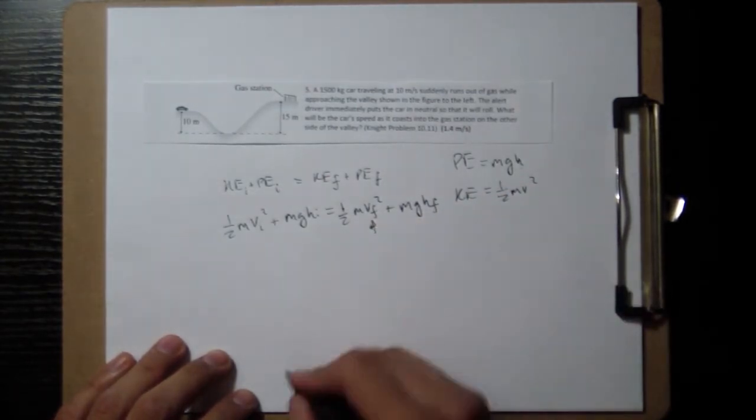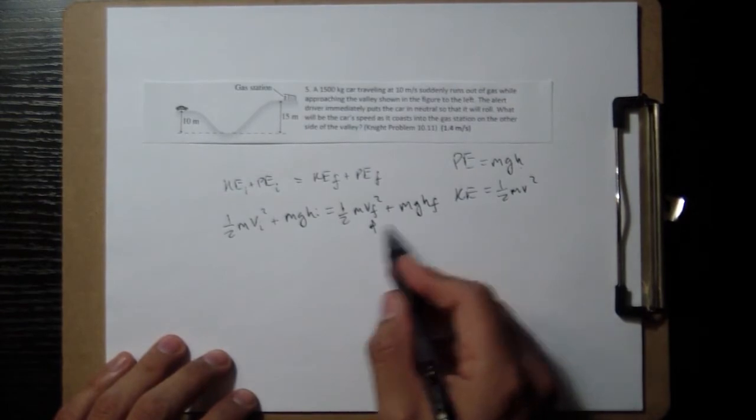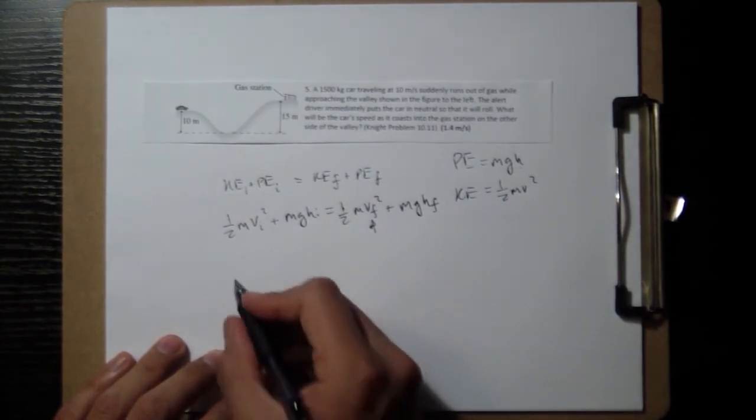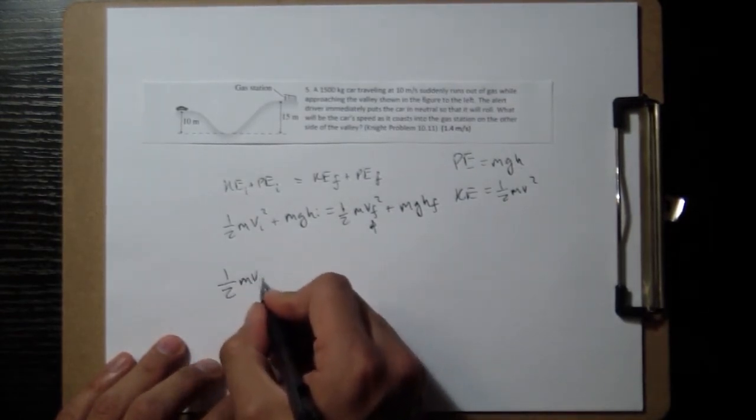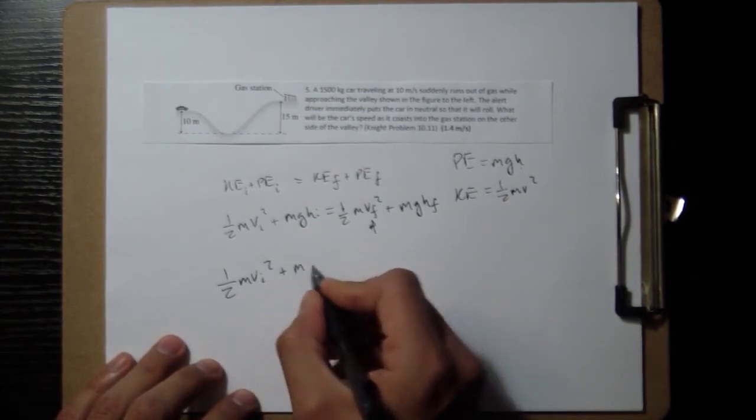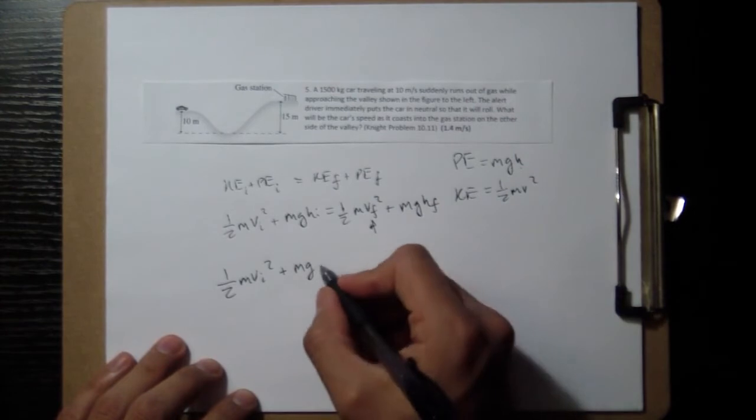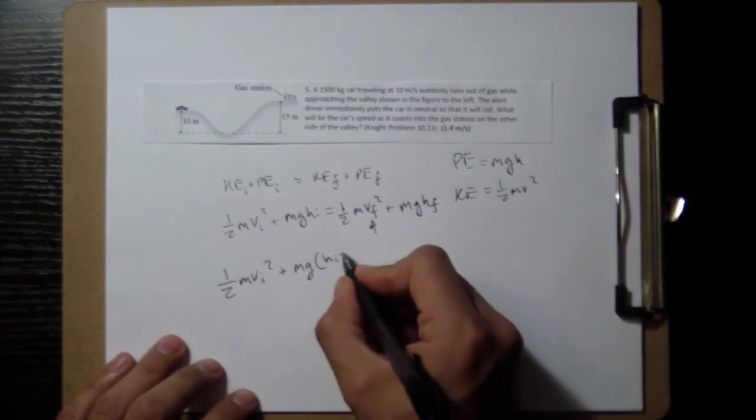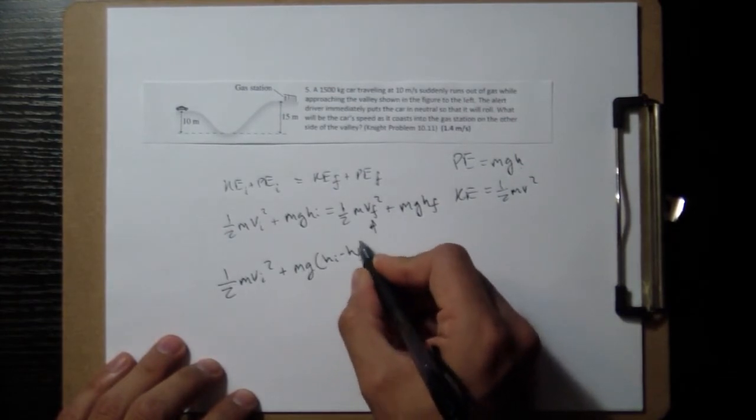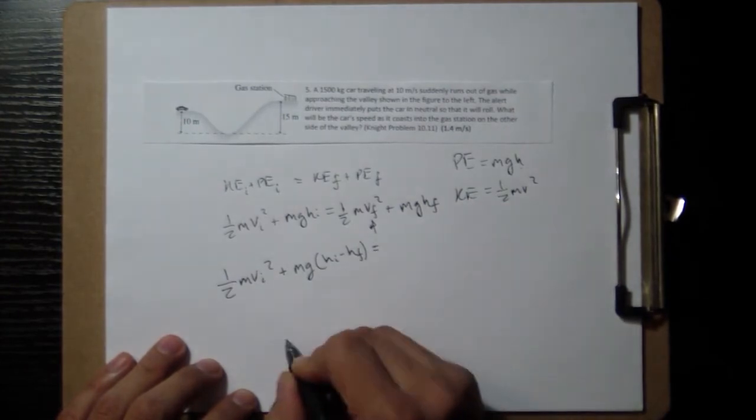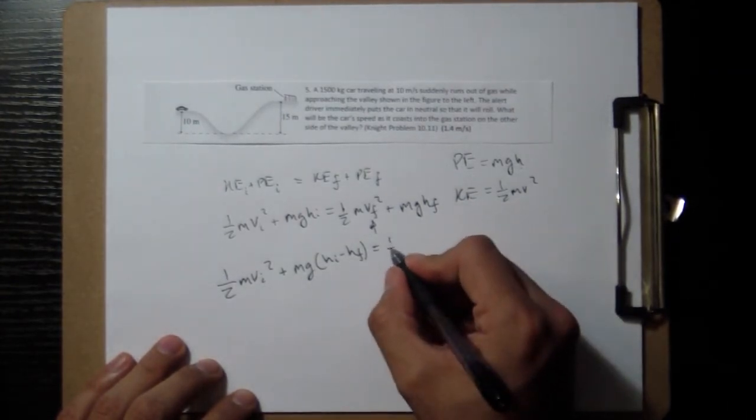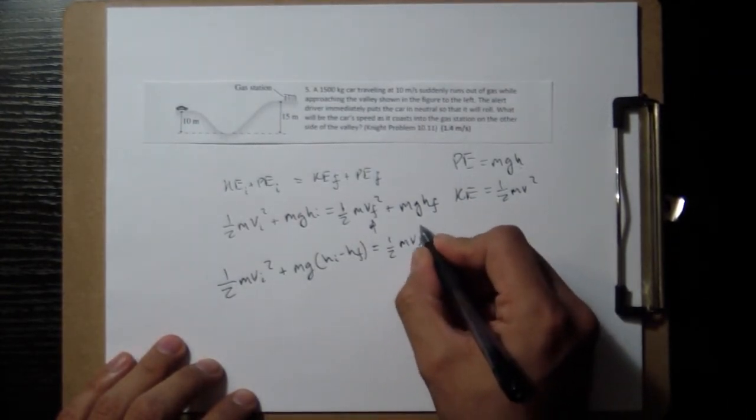I'm looking for this, so I'll subtract this guy to the left. One half mv i squared plus mg, and when I subtract this one, I'm going to factor out mg, and I'm going to have h i minus h f equals one half m v final squared.